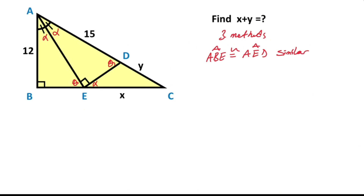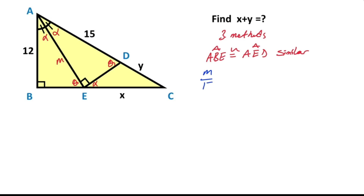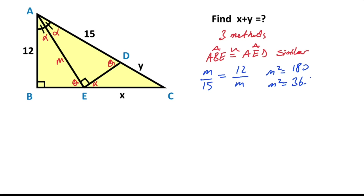Next step, let's call here m. Therefore m, which is opposite the 90 degrees, over 15, which is opposite the 90 degrees, must equal 12, which is opposite theta, over m, which is opposite theta. Therefore m squared equals 180, so m squared equals 36 times 5, that means m equals 6 root 5 units.